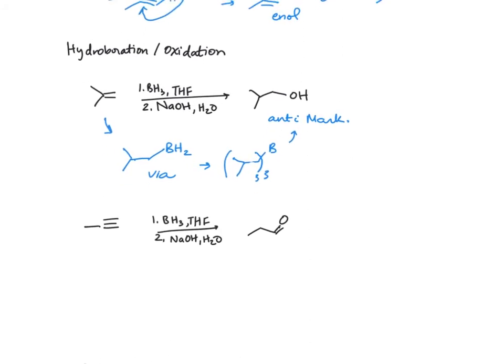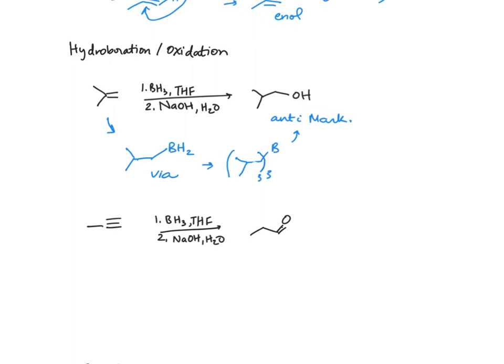For the alkyne, we don't have the addition twice. It's the same case as in the hydration reaction. We are going to form the less substituted enol, and that undergoes a tautomerization to form the less substituted aldehyde.